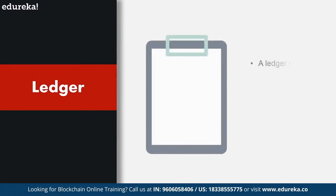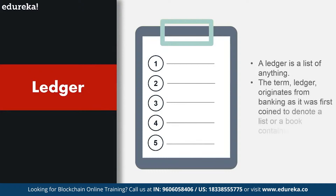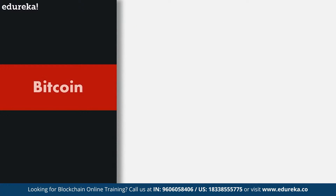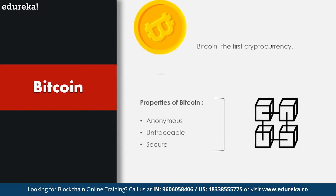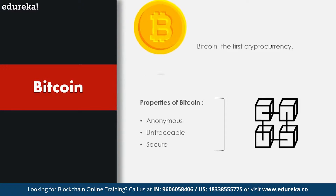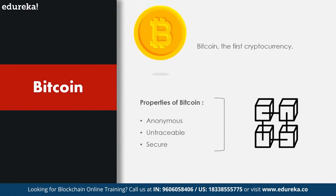Now let's look at the other half of the definition: blockchain is a public ledger system. A ledger is a list of anything. The term ledger originates from banking, where it was first coined to denote a list or book containing financial transactions. In reference to blockchain, the ledger refers to all the transactions committed on the network. The birth of blockchain technology dates back to 2009. While the world was facing one of the toughest economic crises, a group or person under the pseudonym Satoshi Nakamoto introduced Bitcoin — a digital currency not owned by the government, but very much like fiat currency.